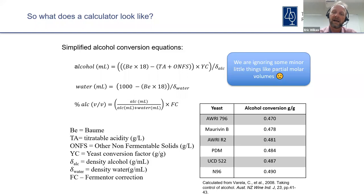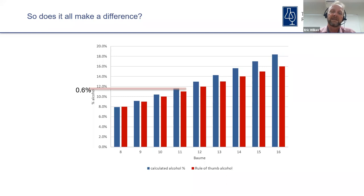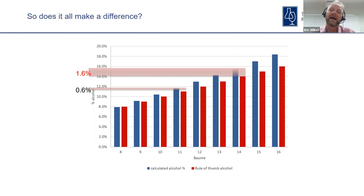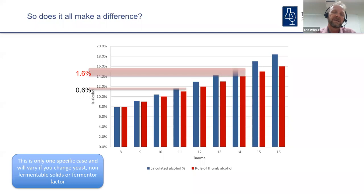Different yeasts have different conversion factors, with an impact of as much as half to one percent of alcohol depending on which yeast you choose. So does it all make a difference? It can. At 11 Baumé in a totally ideal situation, you'd actually see about 11.6 percent alcohol generated, and around 14 Baumé you can get up to 15.5 to 15.6 percent. It's just really hard to work out exactly how all these factors play out.